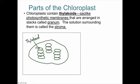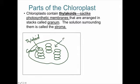An entire stack of thylakoids is called a granum. Another part of the chloroplast you need to know is the stroma. The entire inside of the chloroplast is filled with a fluid — that fluid part is called the stroma. So all around these thylakoids, these stacks, these granums, there's a fluid, and that is the stroma. The fluid-filled part of the chloroplast is the stroma.